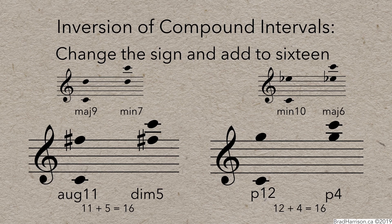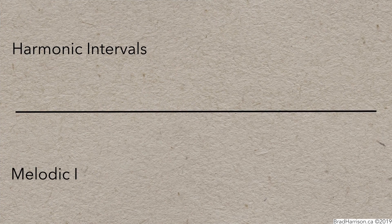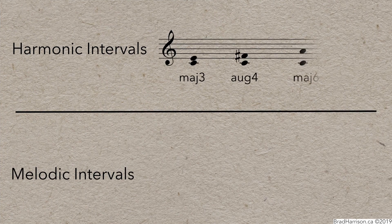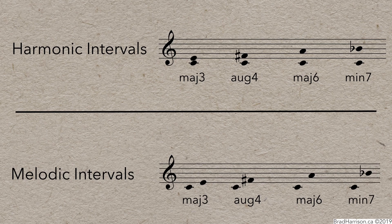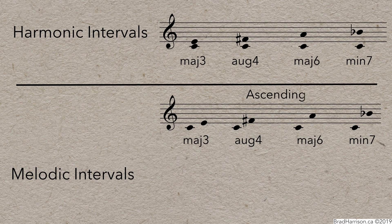There's just a couple other things to know. First, there's harmonic and melodic intervals. The only difference is if the notes are played at the same time, as with harmonic intervals, or one after another, as with melodic intervals, which can be characterized as ascending or descending.